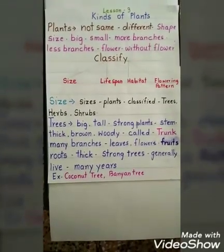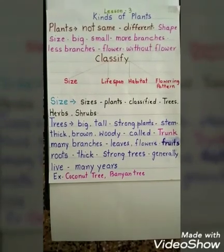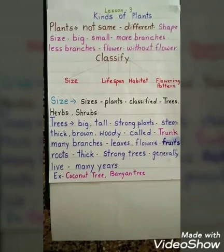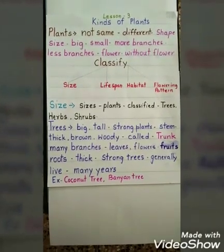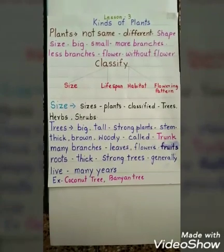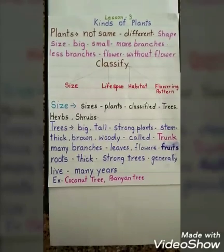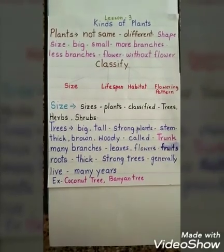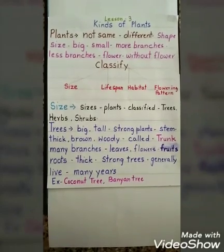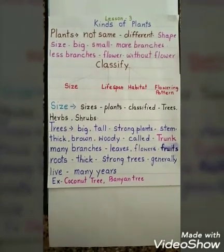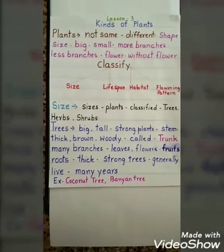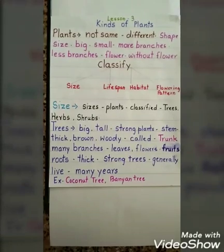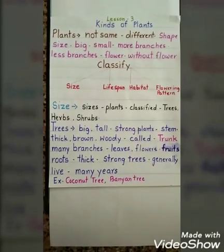We will start with size. According to size, plants are classified as trees, herbs, and shrubs. Starting with trees: trees are big, tall, and strong plants. The stem is thick, brown, and woody, and is called the trunk. Trees have many branches, and on those branches there are leaves, flowers, and fruits. The roots are thick and strong. Trees generally live for many years.